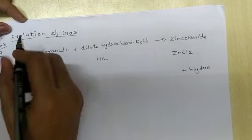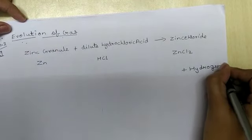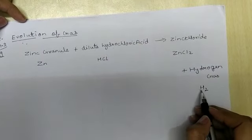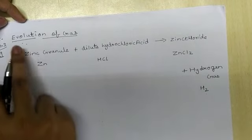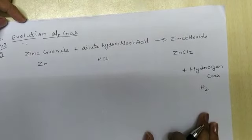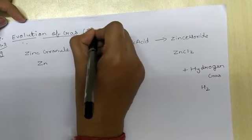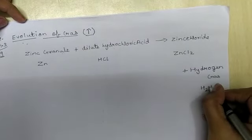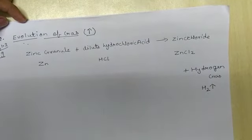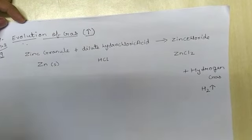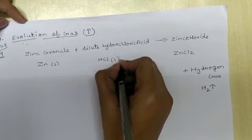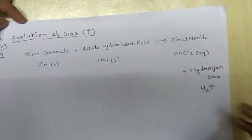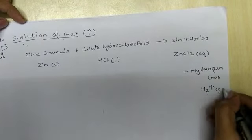What is the second characteristic? Evolution of gas. Hydrogen gas is evolving, represented as H2, because hydrogen is diatomic. When we represent a chemical reaction, we signify evolution of gas with an upward arrow. Zinc is in solid state; hydrochloric acid is in liquid state; ZnCl2 is in aqueous state as the salt dissolves; and hydrogen gas is in gaseous form.